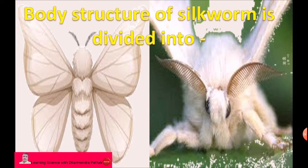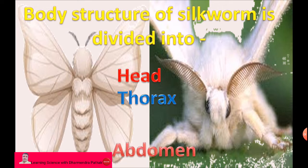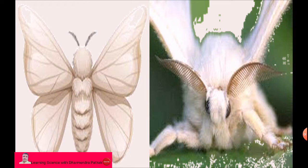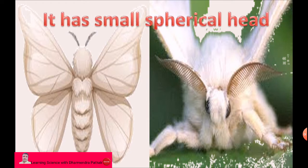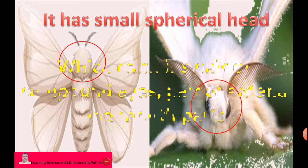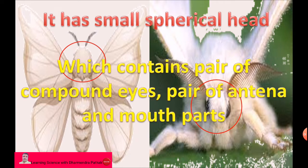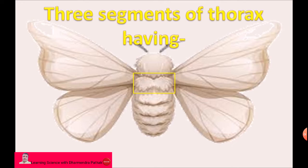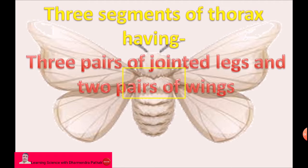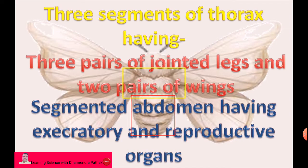The body structure of silkworm is divided into three parts: head, thorax, and abdomen. It has a small spherical head that contains a pair of compound eyes, a pair of antennae, and mouth parts. Three segments of thorax have three pairs of jointed legs and two pairs of wings. The segmented abdomen contains excretory and reproductive organs.